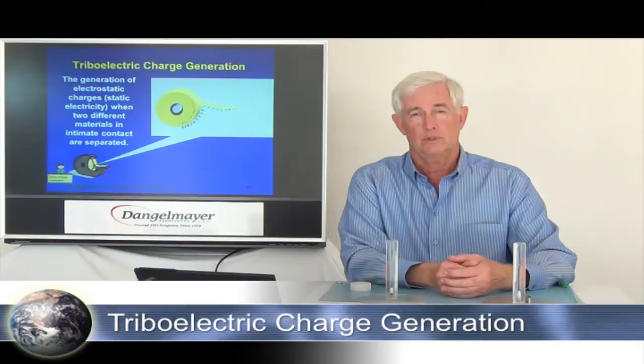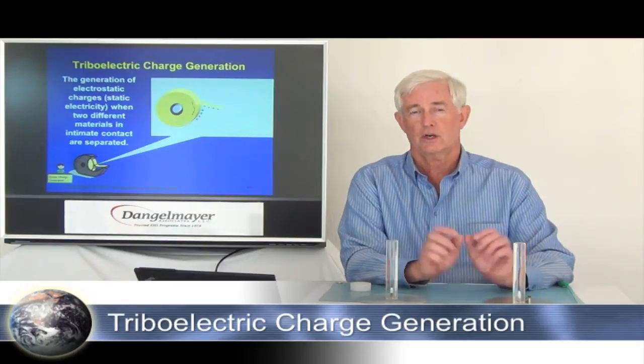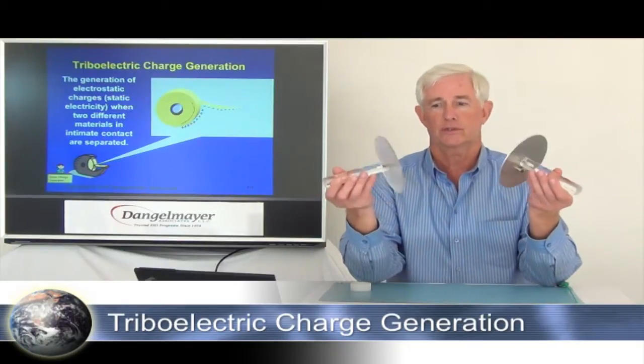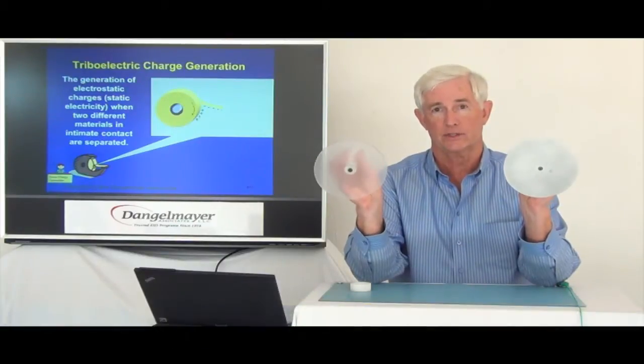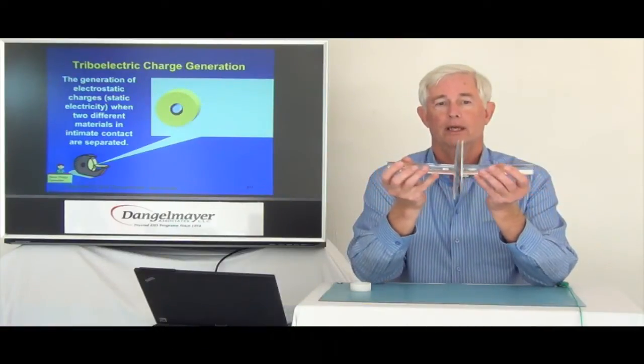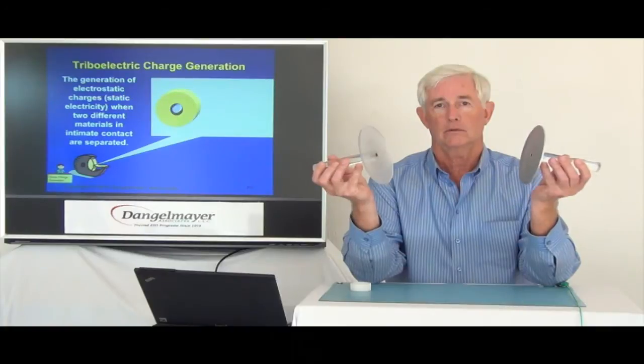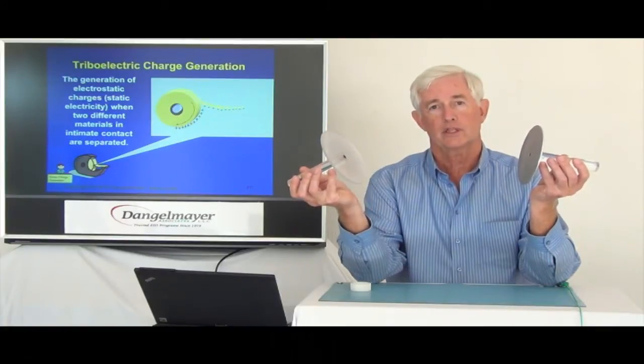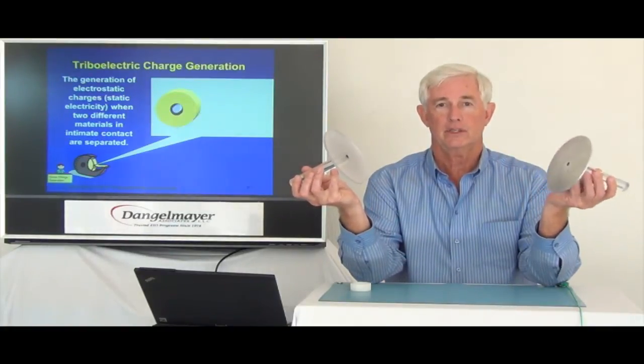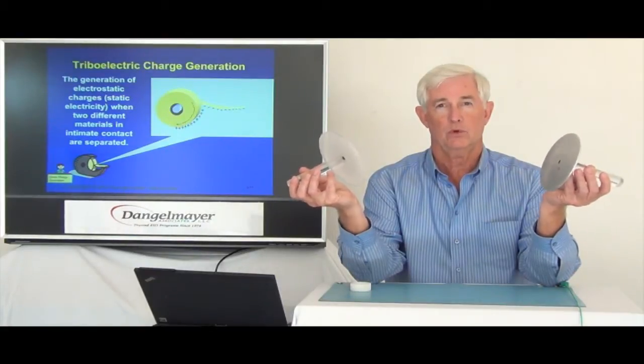Now simply put, triboelectric charging occurs when two dissimilar materials, such as you see here on these disks, come together and separate. One will come away positively charged and the other negatively charged at the same and equal potential.